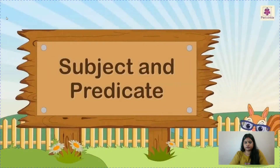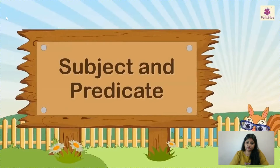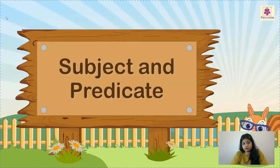Good morning, children. In my last video I explained what is a sentence and different kinds of sentences. We learned that a sentence is a group of words that has complete meaning, and it has four different kinds: assertive or declarative sentence, imperative sentence, interrogative sentence, and exclamatory sentence. Today we are going to learn about how to divide a sentence into two parts.